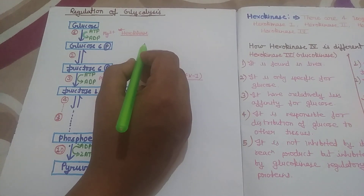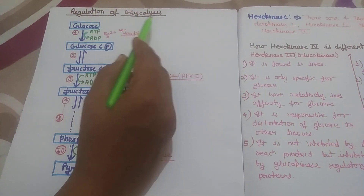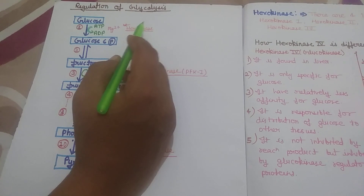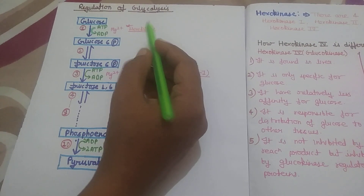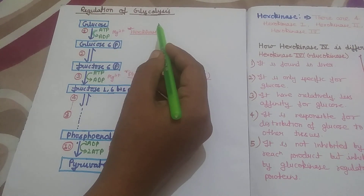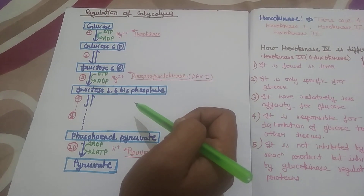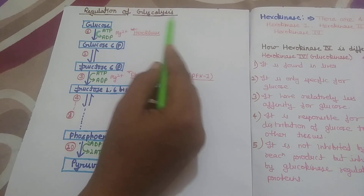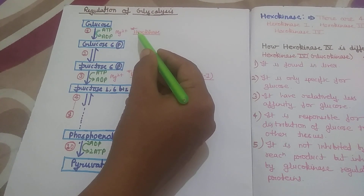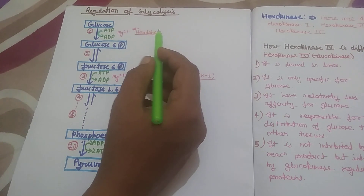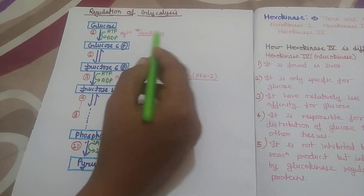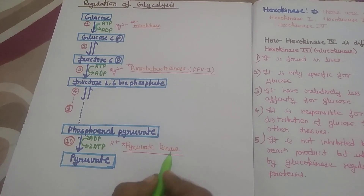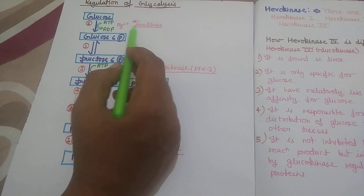In today's video lecture I am going to explain the regulation of glycolysis. This is an important topic for the GATE Biotechnology exam as well as semester exams. In my previous video I explained the process of glycolysis. In this video I will only teach the regulation of glycolysis. There are mainly three steps which regulate glycolysis: the three enzymes are Hexokinase, Phosphofructokinase (PFK1), and Pyruvate Kinase.